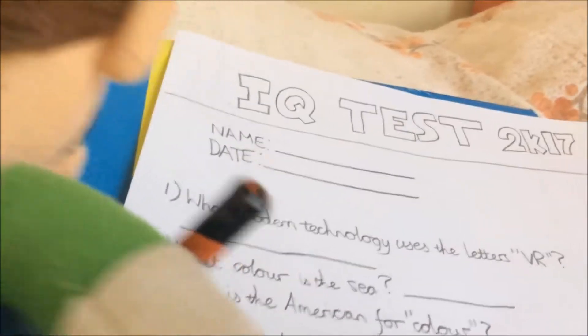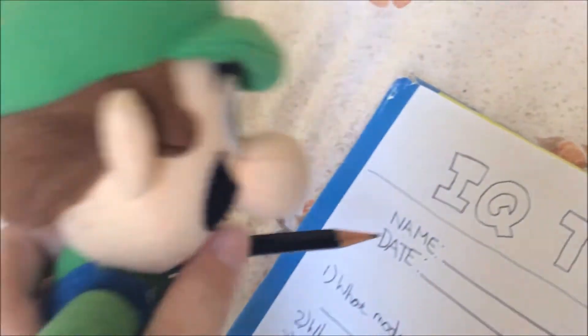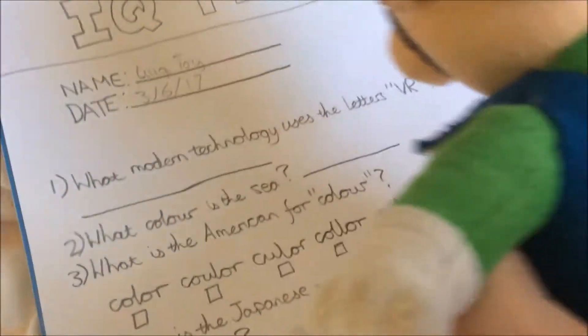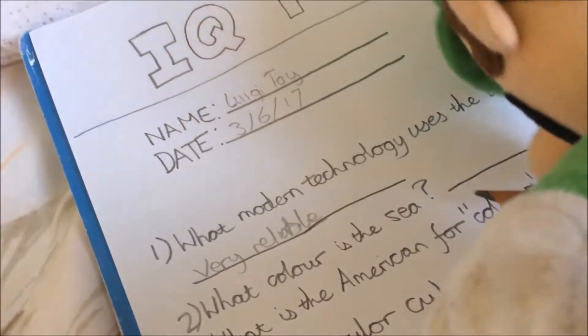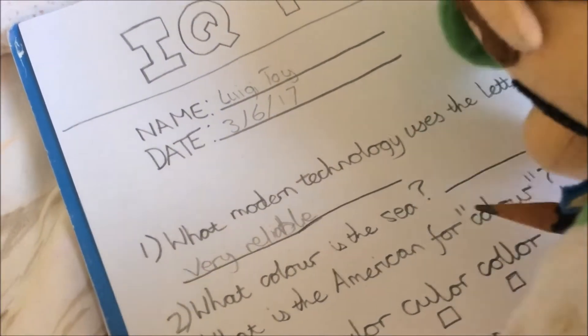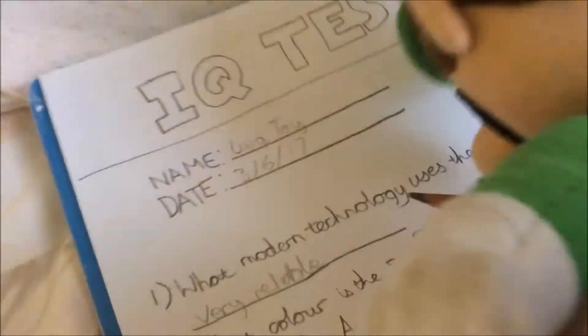Name. Oh wait, it's LuigiToy, isn't it? Yes. There we go, LuigiToy and the date. What modern technology uses the letter VR? Very reliable. What colour is the C? Oh, is it blue? I think it's actually green. There we go.